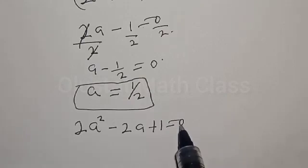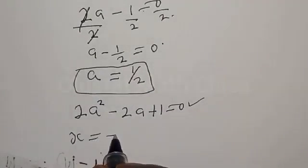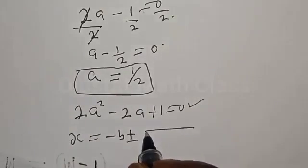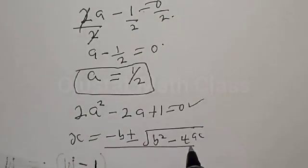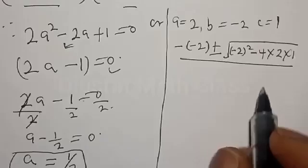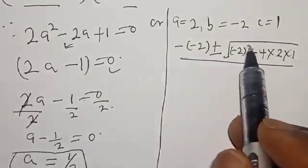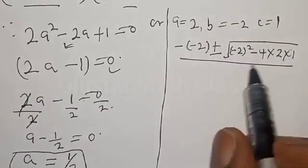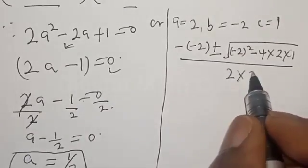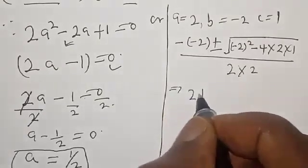Also from the first case: 2a² minus 2a plus 1 equals zero. This is a quadratic equation. Let's solve it using the quadratic general formula: a equals minus B plus or minus square root of B² minus 4ac, all over 2a. Here we substitute: minus into minus 2, plus or minus square root of (minus 2)² minus 4 times 2 times 1, over 2 times 2.